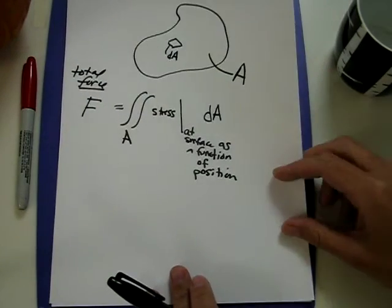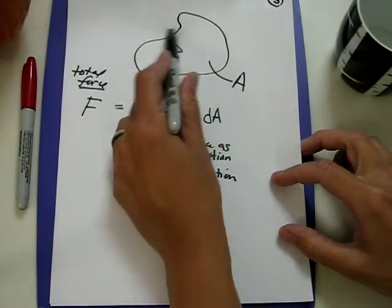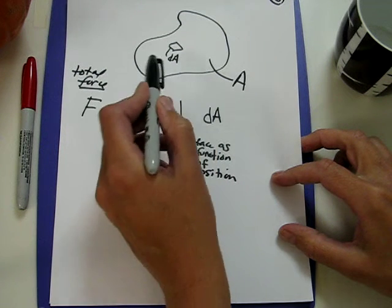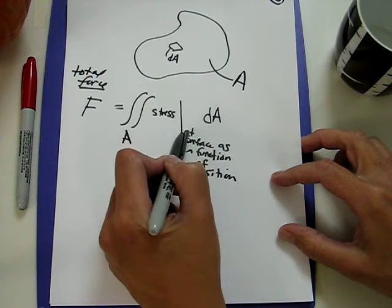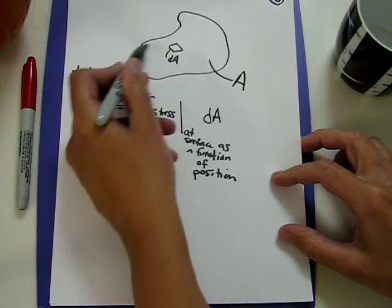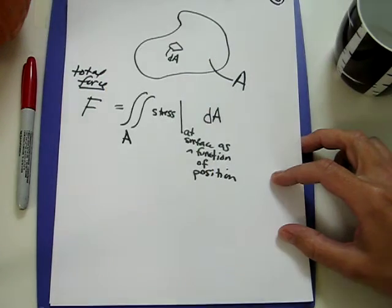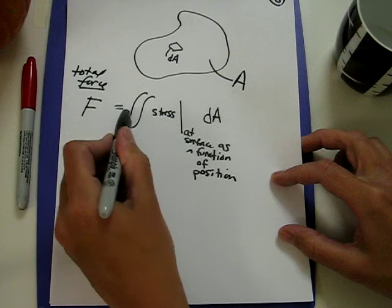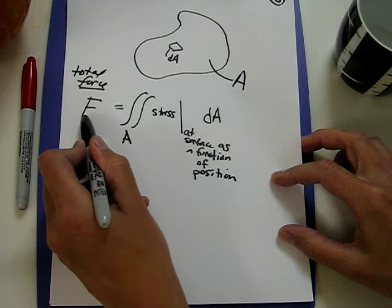When we have our system written in an interesting coordinate system, we can do an integration to do that summing. So once again it's the stress at the surface, and this may be a function of position, integrated over the entire surface area gives the total force.